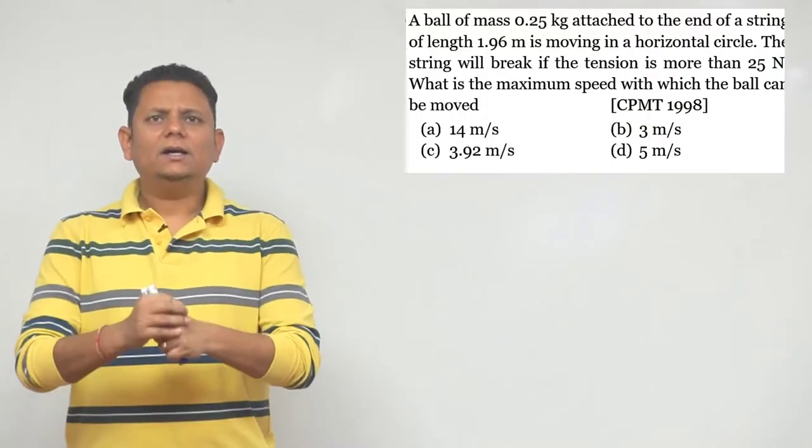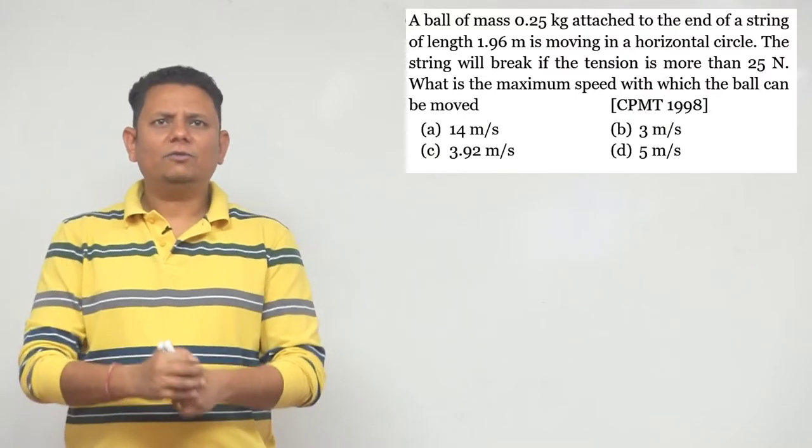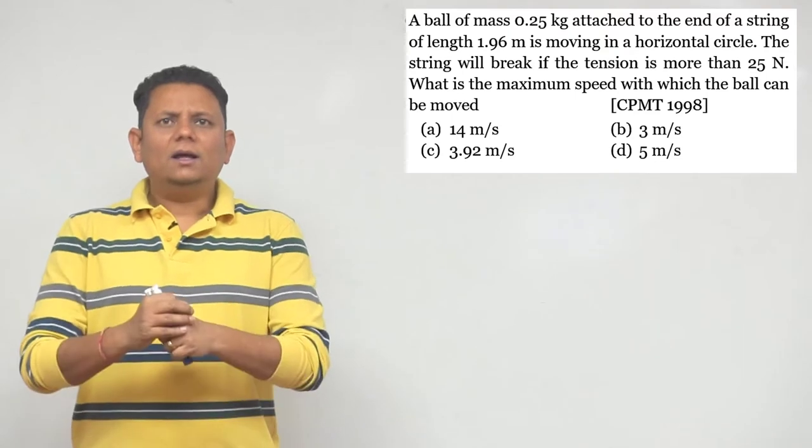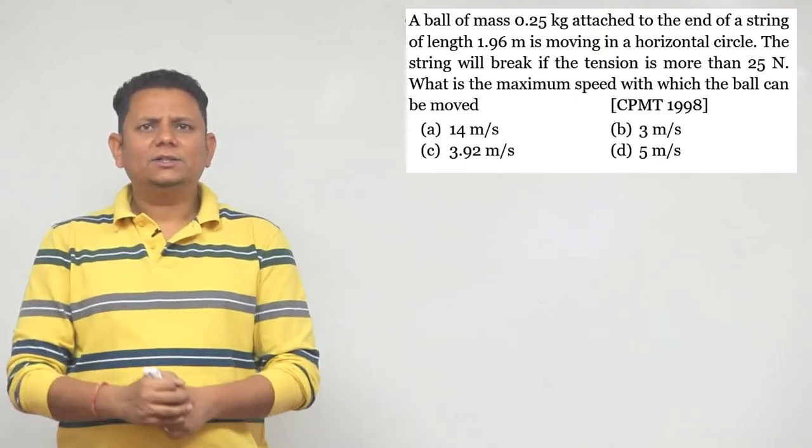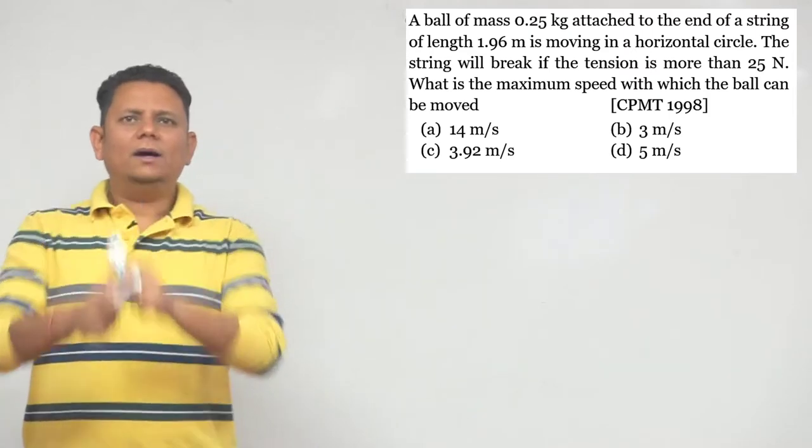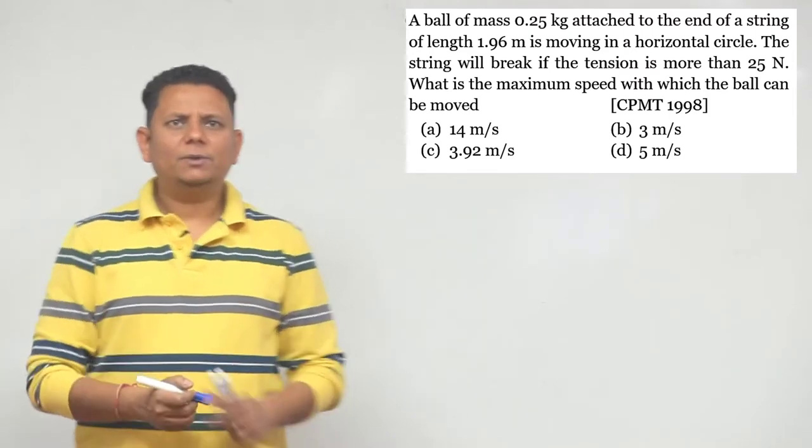Next question: A ball of mass 0.25 kg attached to the end of a string of length 1.96 meter is moving in a horizontal circle. The string will break if the tension is more than 25 newton. What is the maximum speed with which the ball can be moved in a horizontal circle?